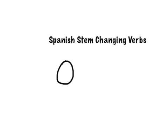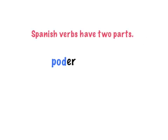In this video we're going to talk about Spanish stem-changing verbs, specifically the O to UE stem-changing verbs. Spanish verbs have two parts: the stem and the ending. Verbs are classified by their ending — either ER, IR, or AR.